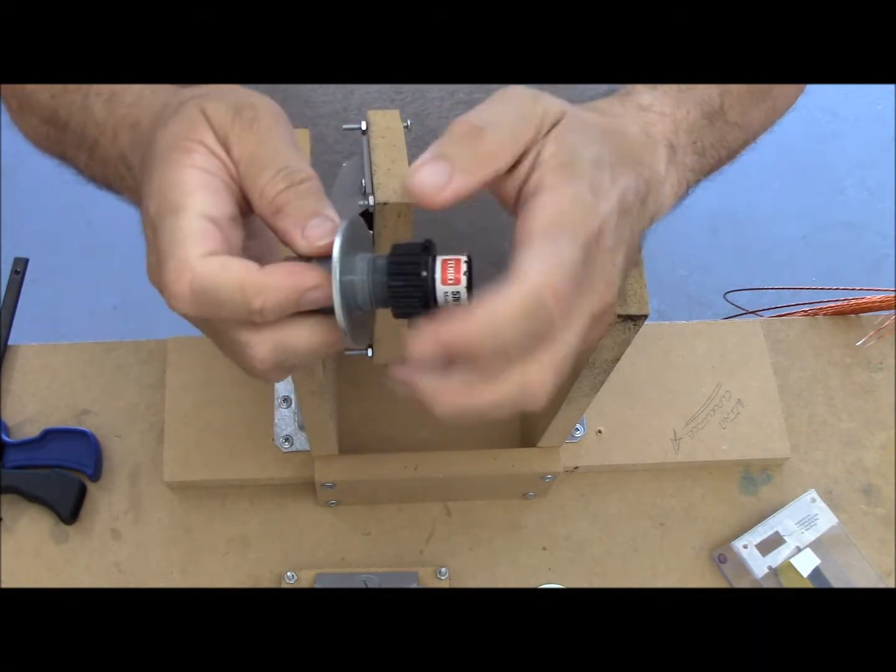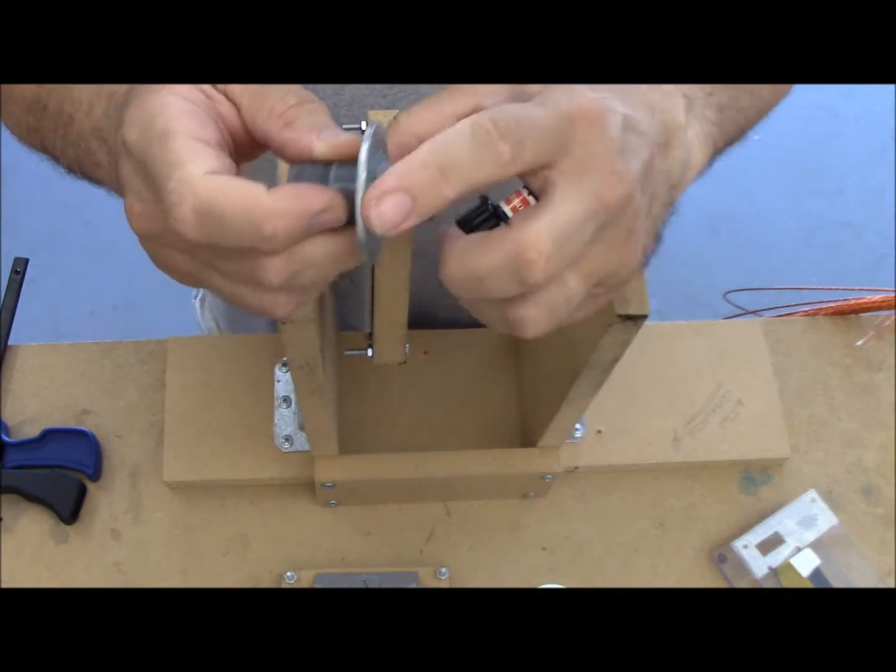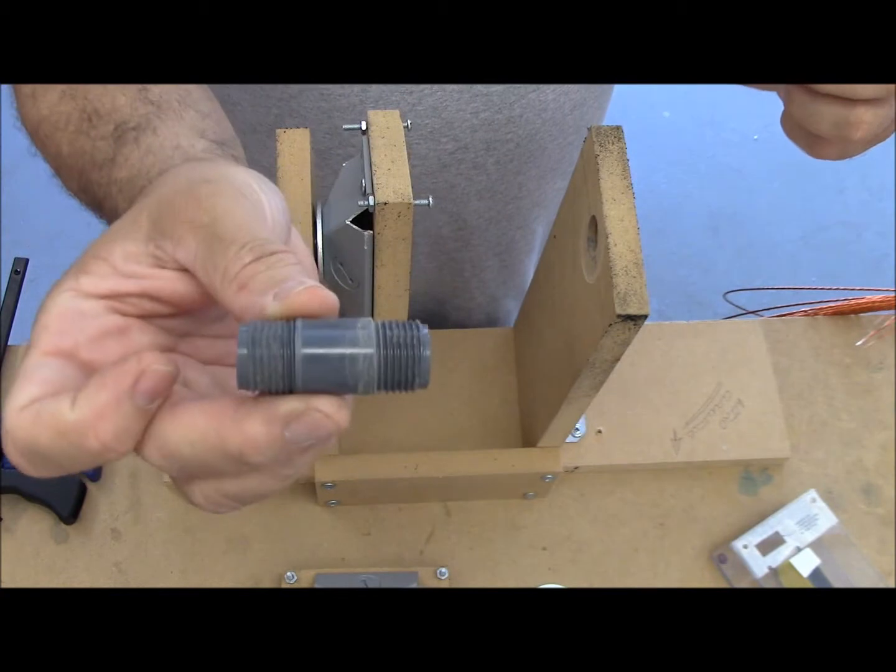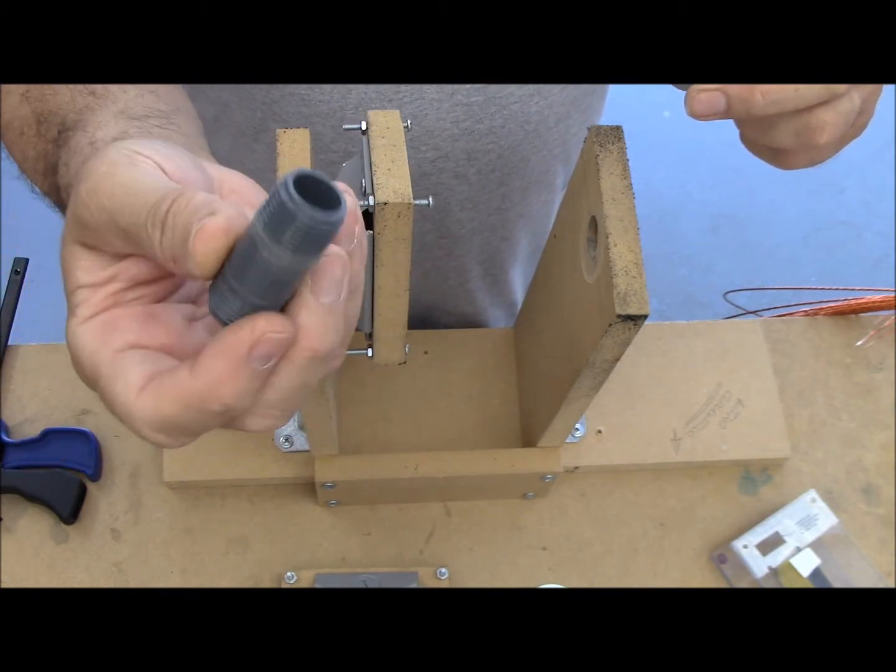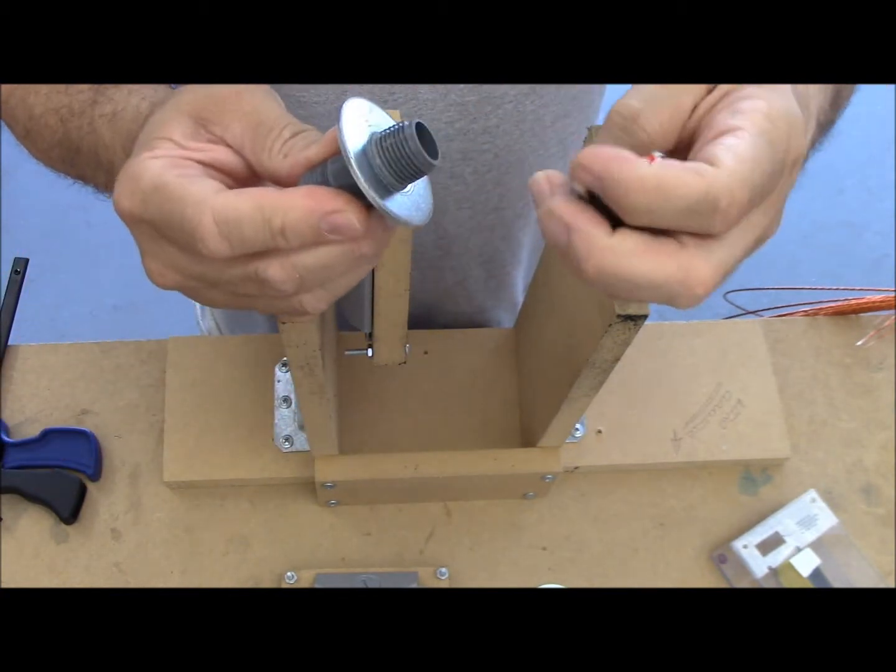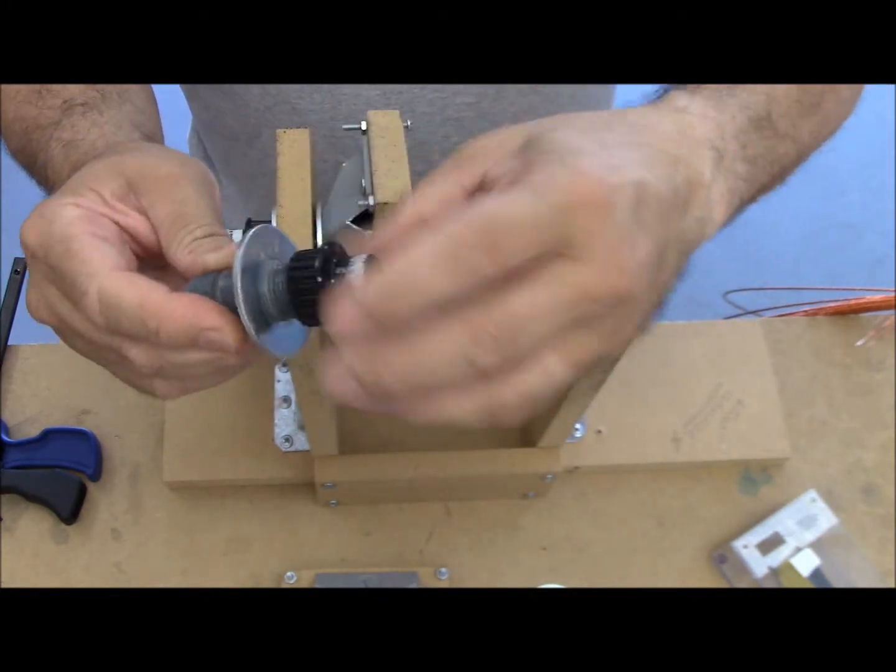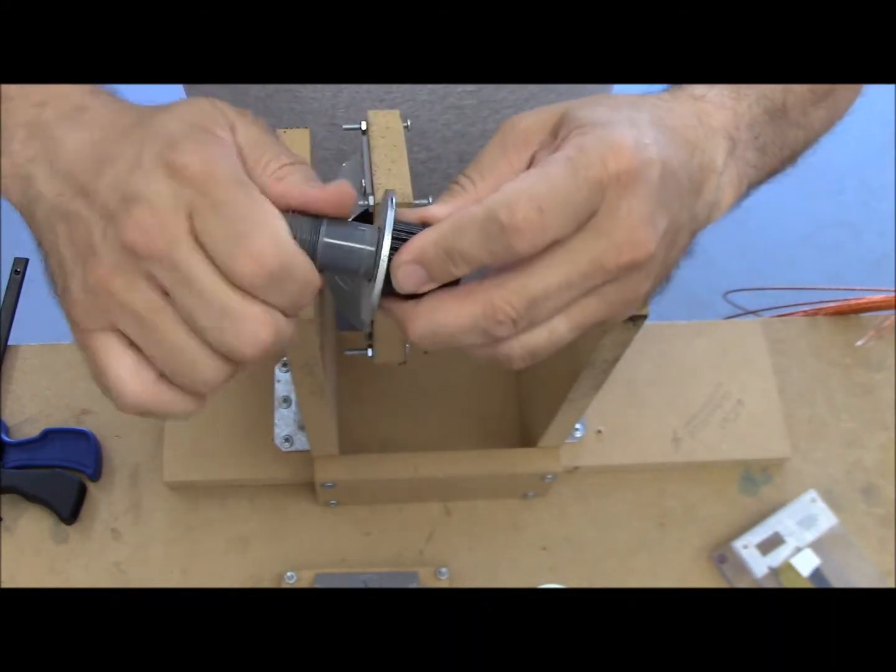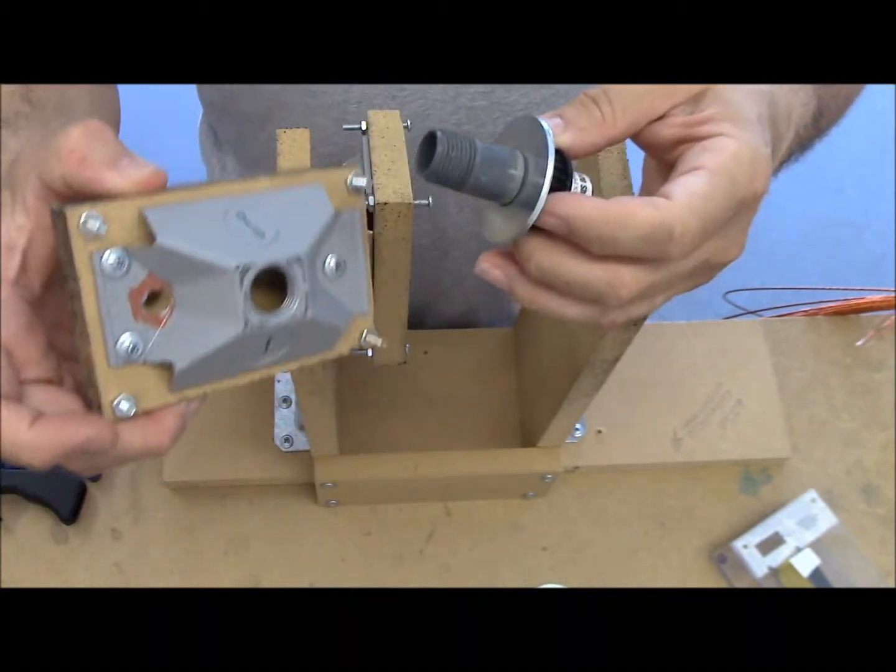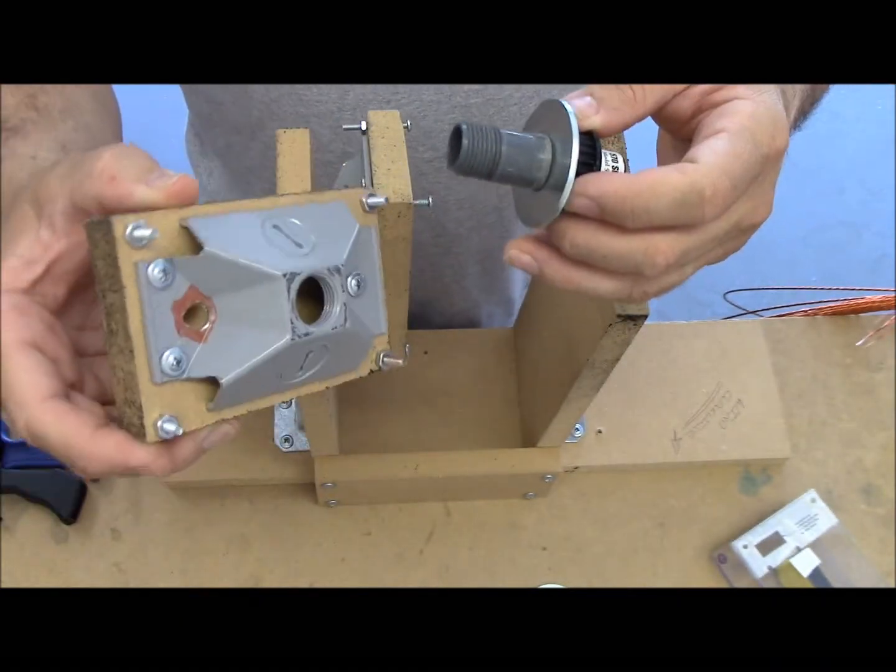This part here is simply a one inch tubing from the plumbing department for sprinkler head risers. This is a Toro head sprinkler head riser. I only needed a cap and a couple of washers to let the coil spin. And that's pretty much it.